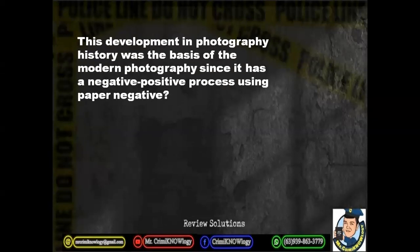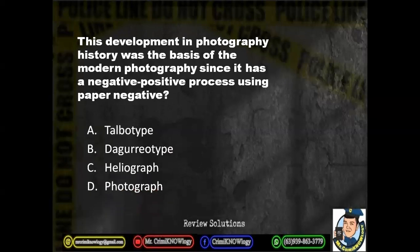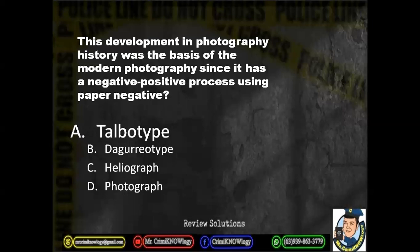Next question. This development in photography history was the basis of modern photography since it has a negative-positive processing using paper negative. The choices are: A. Talbot type. B. Daguerreotype. C. Heliograph. D. Photograph. The correct answer is Talbot type, also known as the calotype. This is the basis of modern photography because it has the capability of negative and positive processing — unlike Daguerreotype which only has a positive process and cannot reproduce again, a problem the calotype solved.